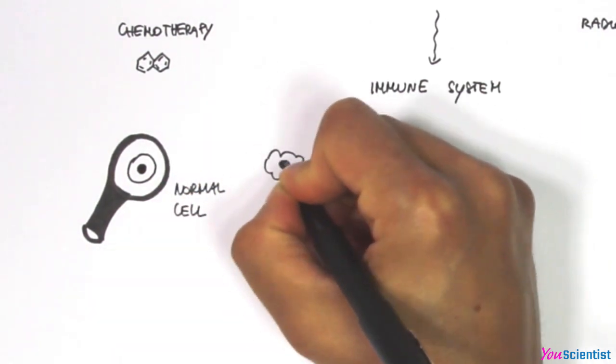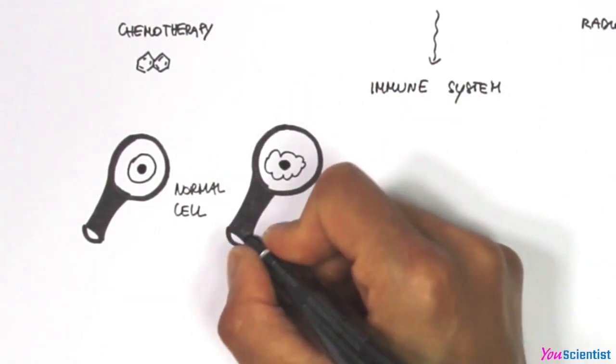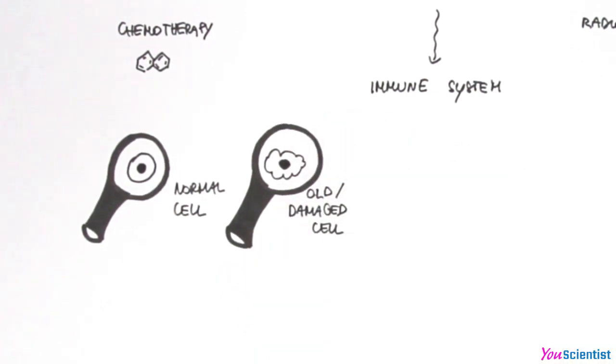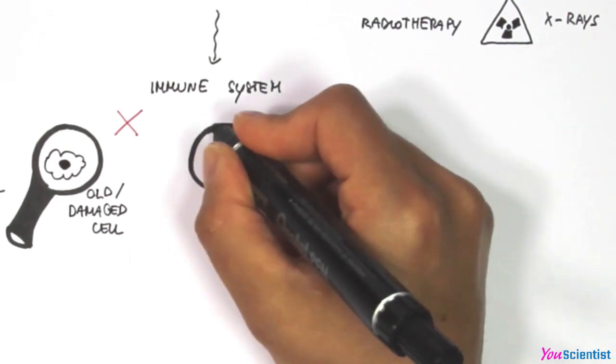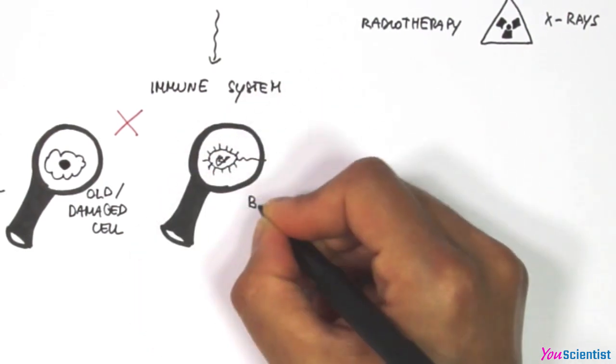Like a magnifying glass, it is able to distinguish between normal and modified cells and to kill old or damaged ones. The immune system recognizes and removes exogenous cells such as bacteria or viruses.